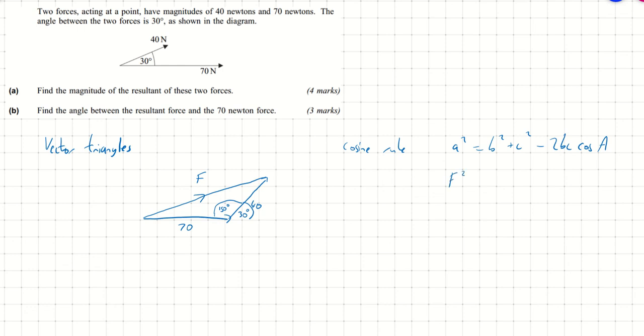So in our example we want to find the resultant which is F. Well, F squared is equal to 40 squared plus 70 squared minus 2 times 40 times 70 times cos 150.